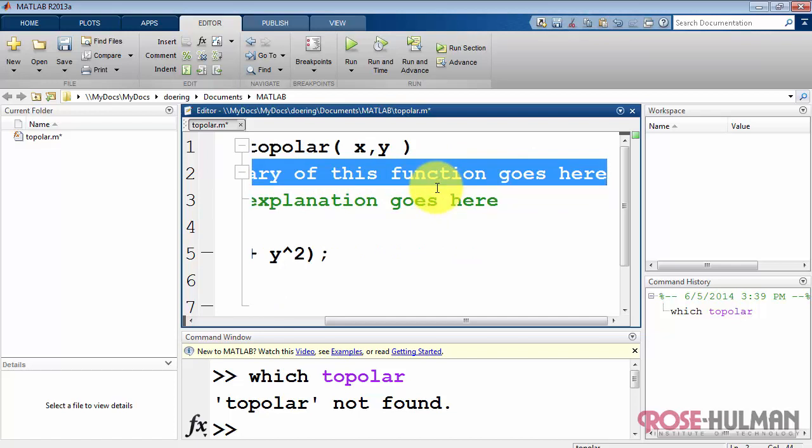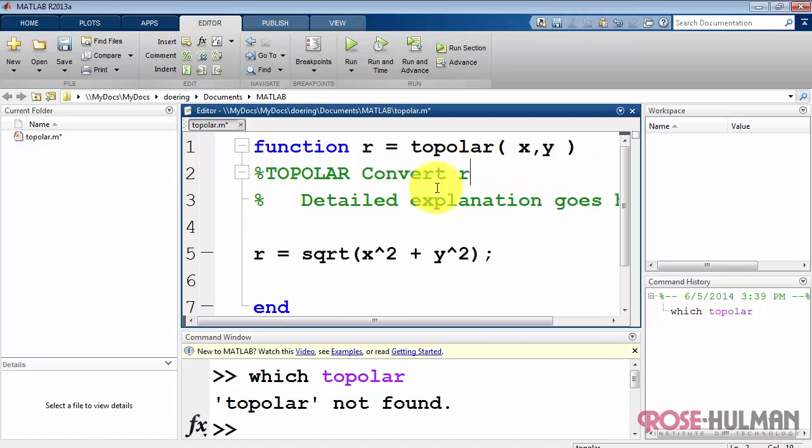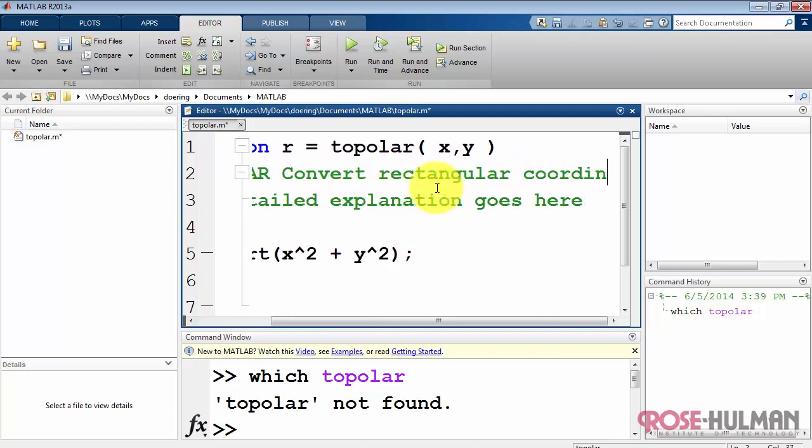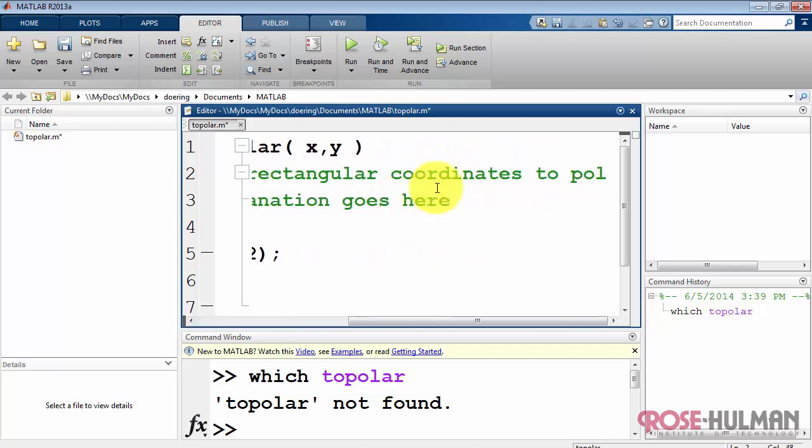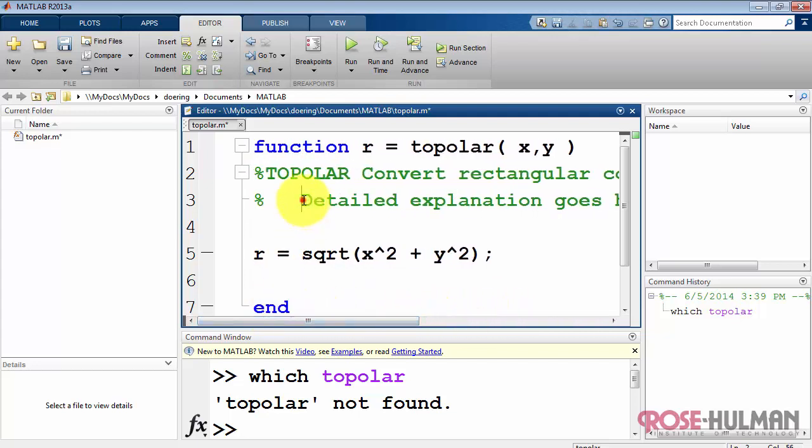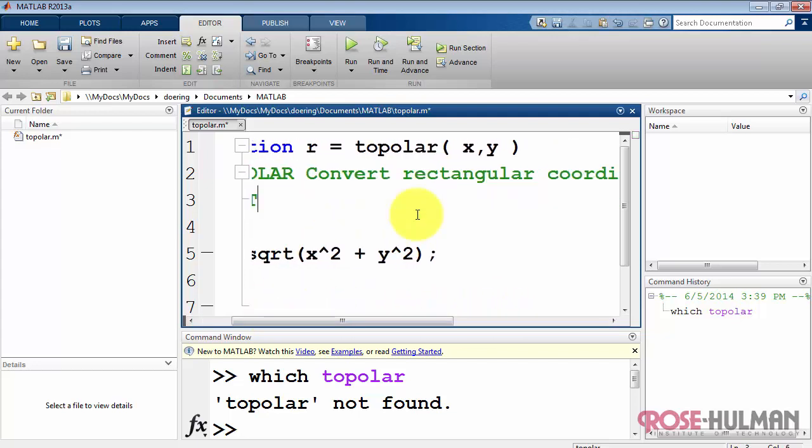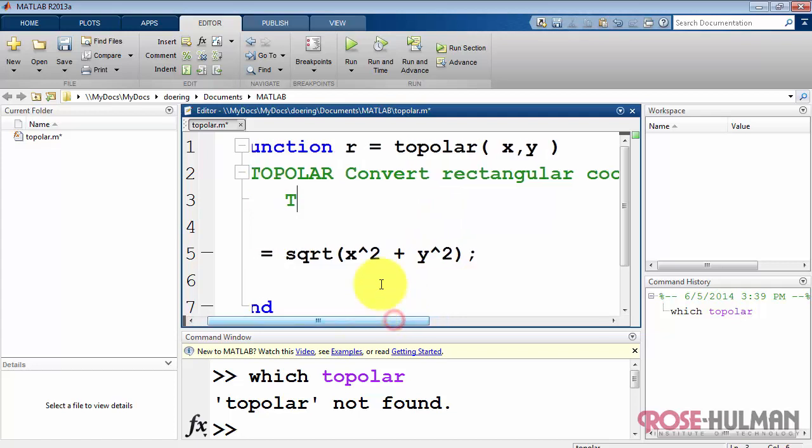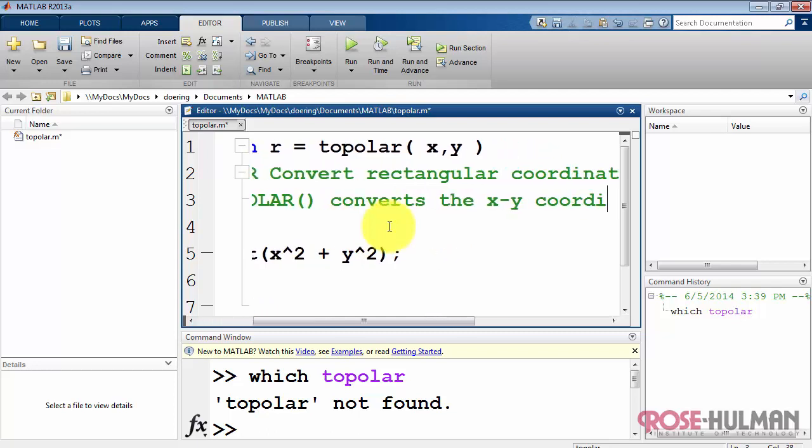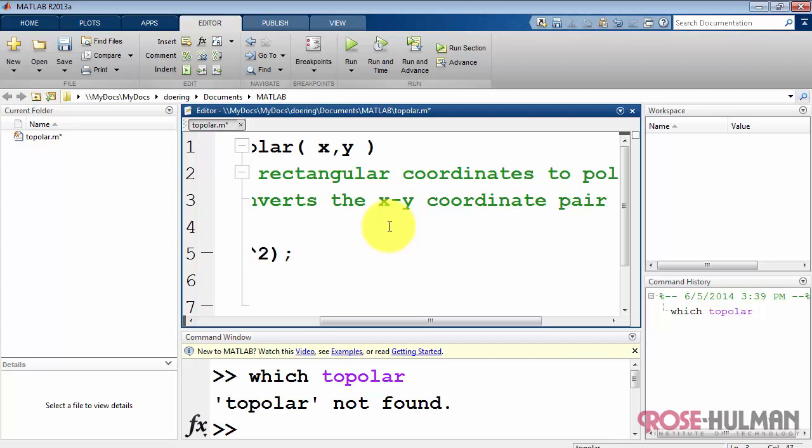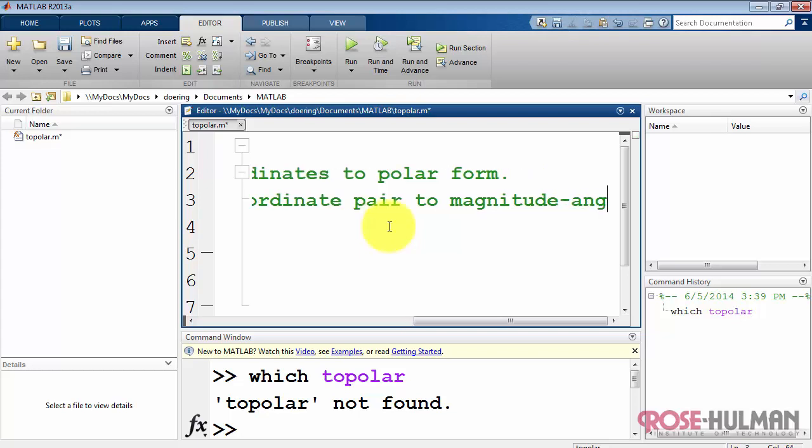At this point, I'm going to work on updating the documentation. And what you type here is what will appear when you type HelpWin toPolar later on. To save time, I won't be typing very much here, but you can make this section of the documentation be as complete as you need to. And in a moment, I'll show you how what you type here in the function body appears specifically in the Help.